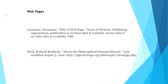Web pages include the name of the author, title of the web page, name of the website, and publishing organization. Use the publication or revision date if available. You can use the access date if you don't have another date available. Also, use the URL.